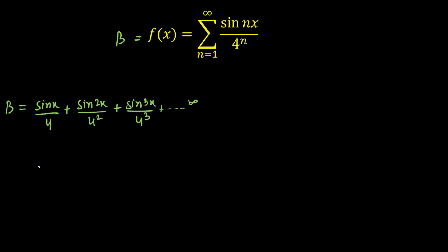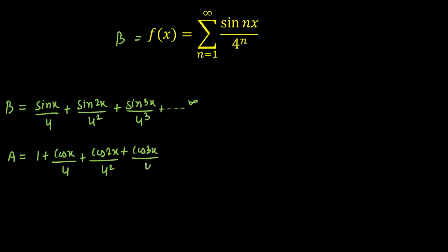Now let's consider one more series, which I'm denoting as a, equal to 1 plus cos(x)/4 plus cos(2x)/4² plus cos(3x)/4³, and this also goes up to infinity. You may ask why I'm taking these two series instead of solving directly — it's very difficult to solve directly, so we'll use Euler's formula here.